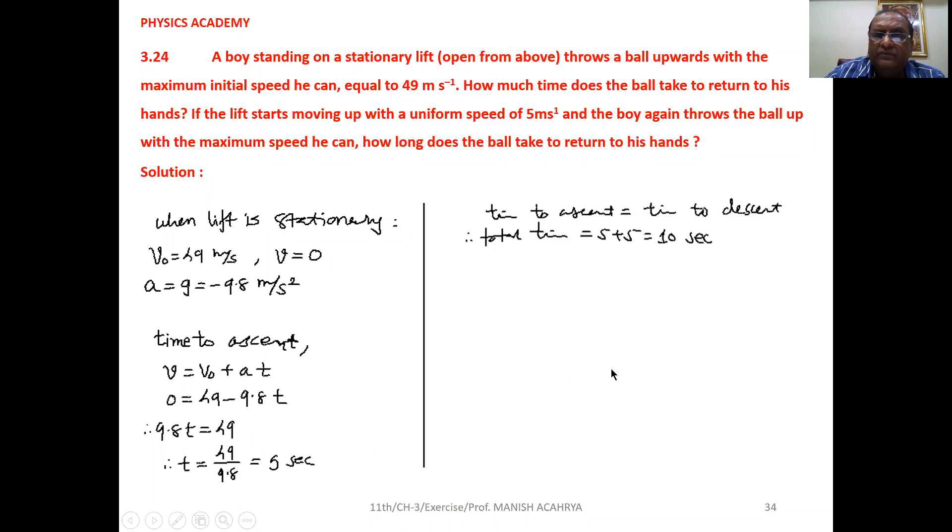Time to ascend is exactly equal to time to descend. So total time between the ball is thrown and again ball returned to the hands is 5 plus 5, 10 seconds.